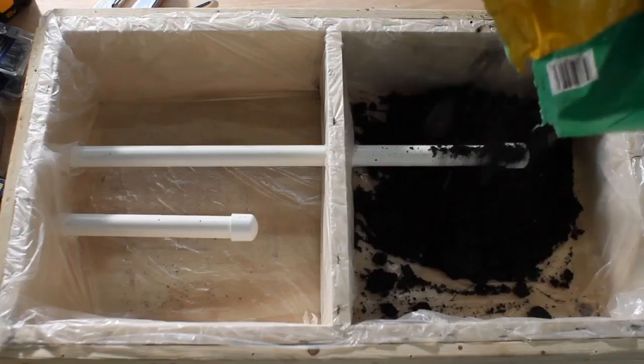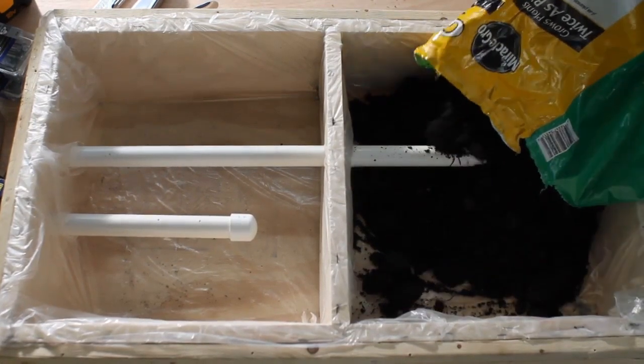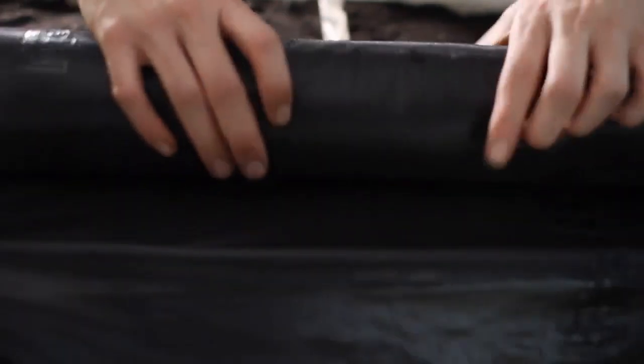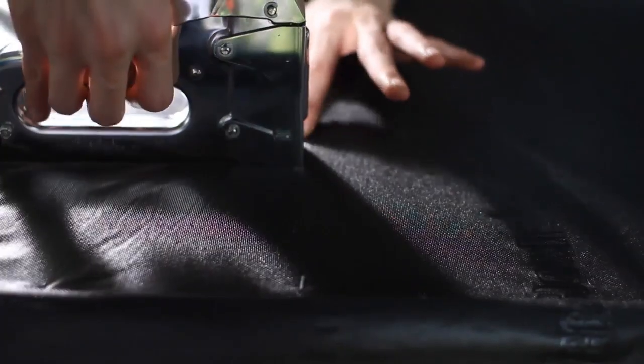Now we're ready to get a little dirty. Fill both compartments with soil, shaking the box occasionally to let it settle. With the soil in place, stretch a piece of black ground cover or shade cloth across the frame and staple it into place.